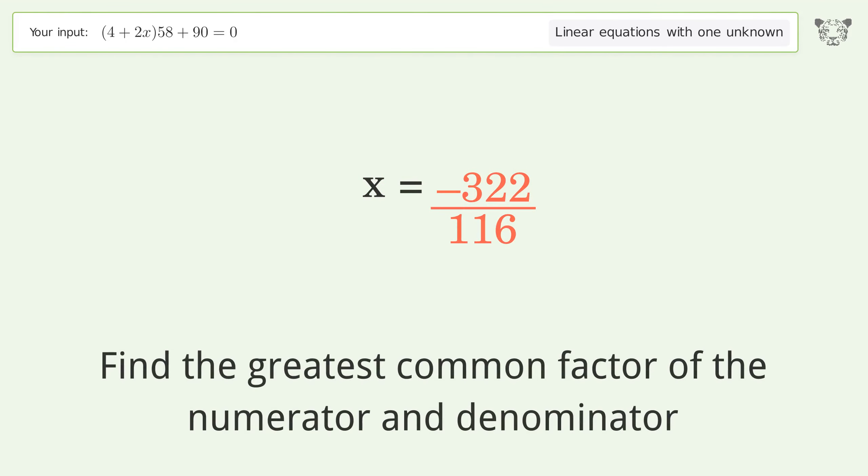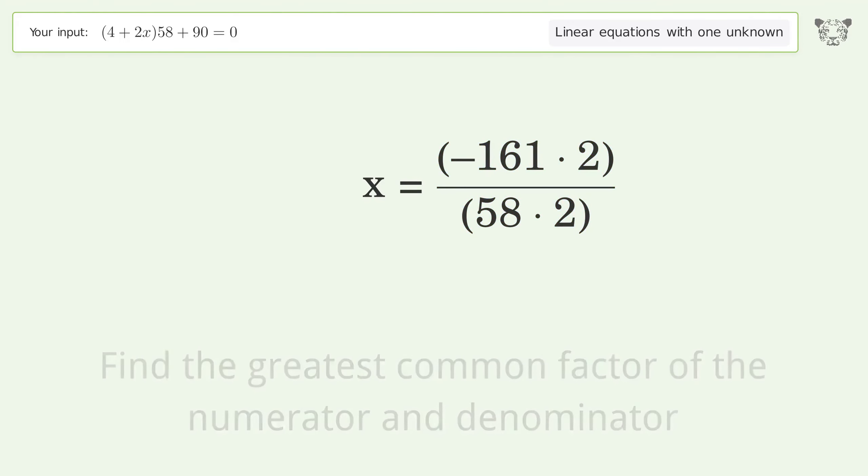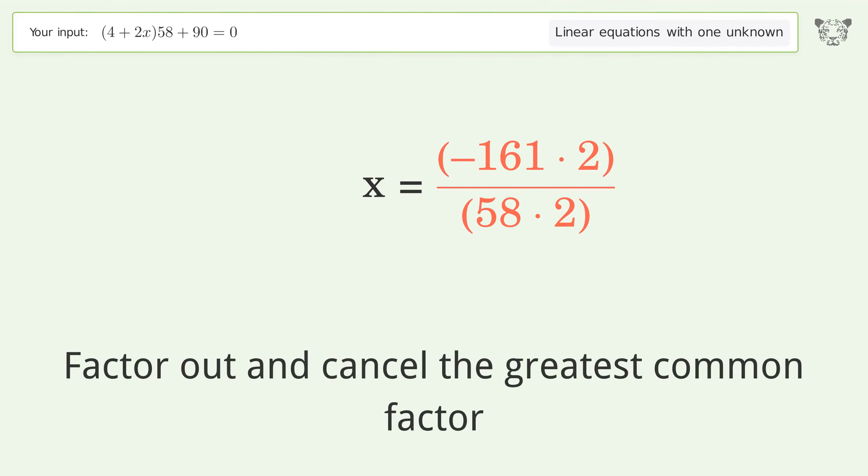Find the greatest common factor of the numerator and denominator, then factor out and cancel the greatest common factor.